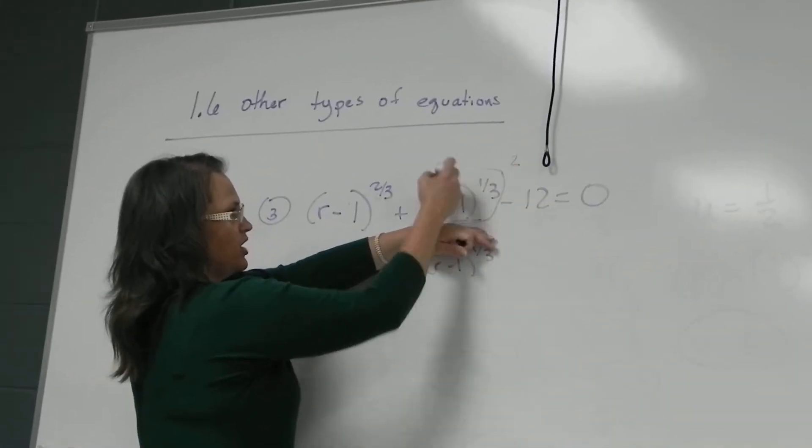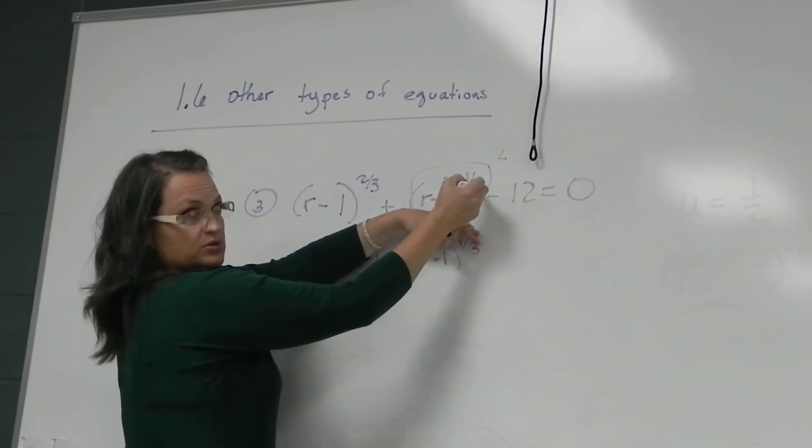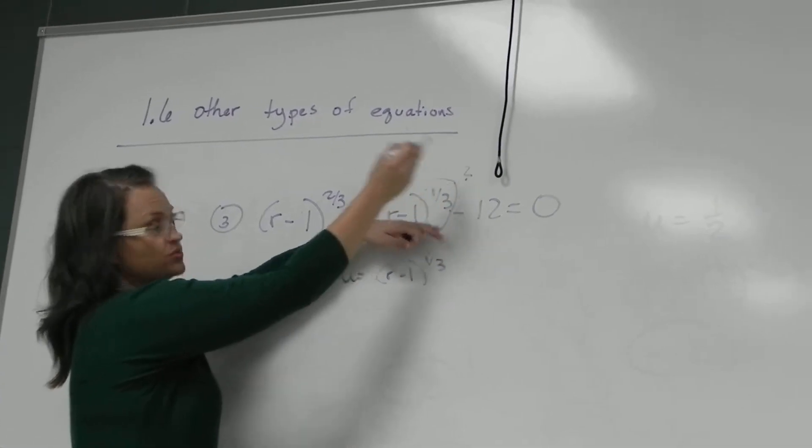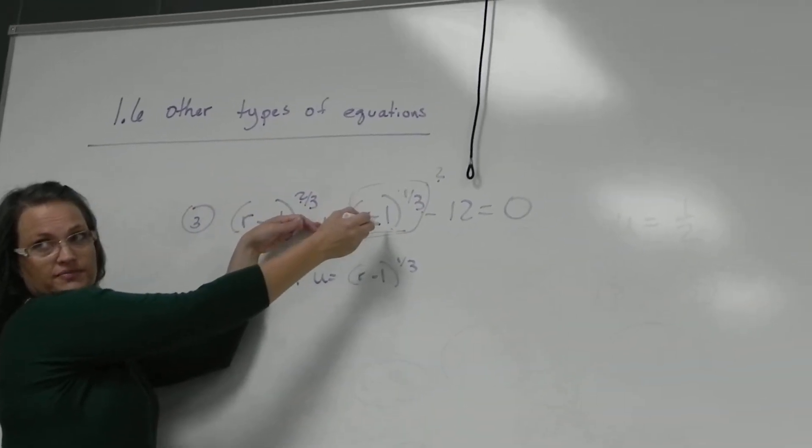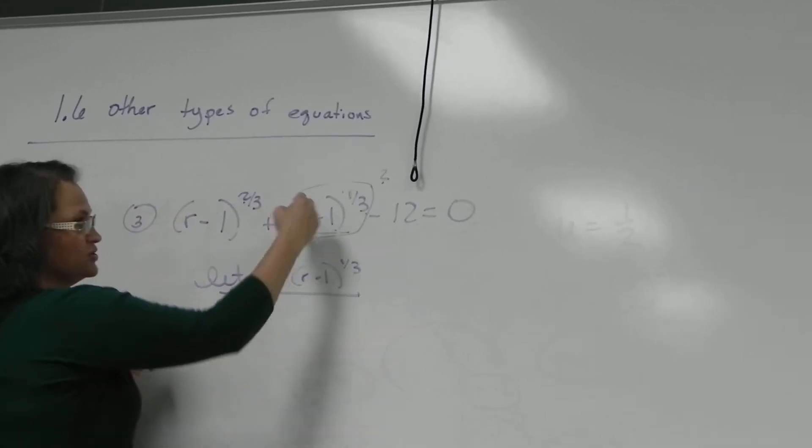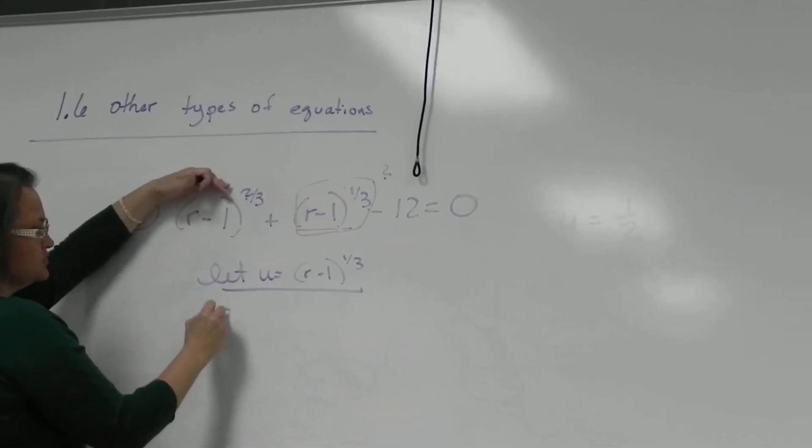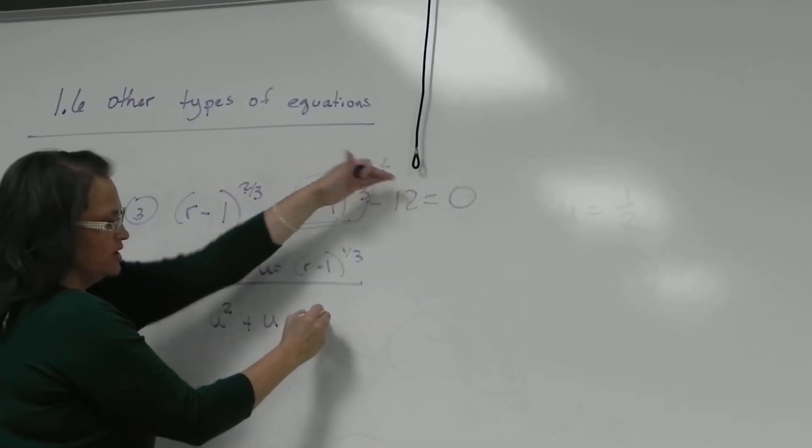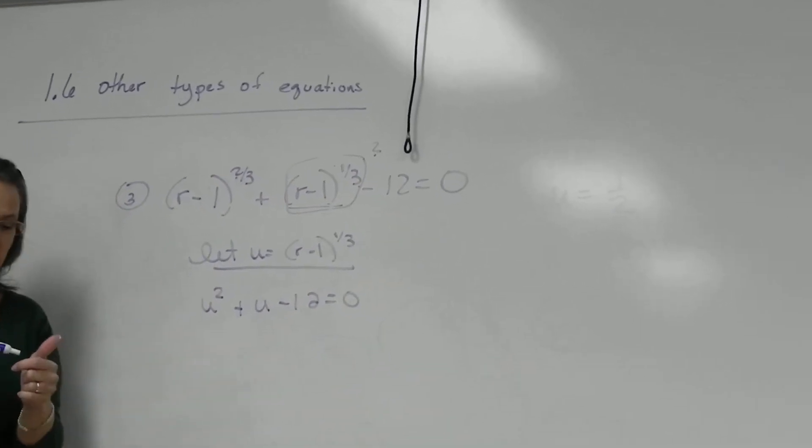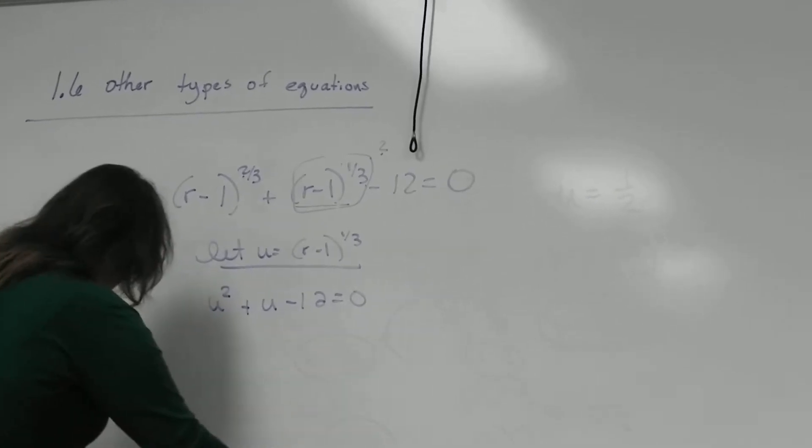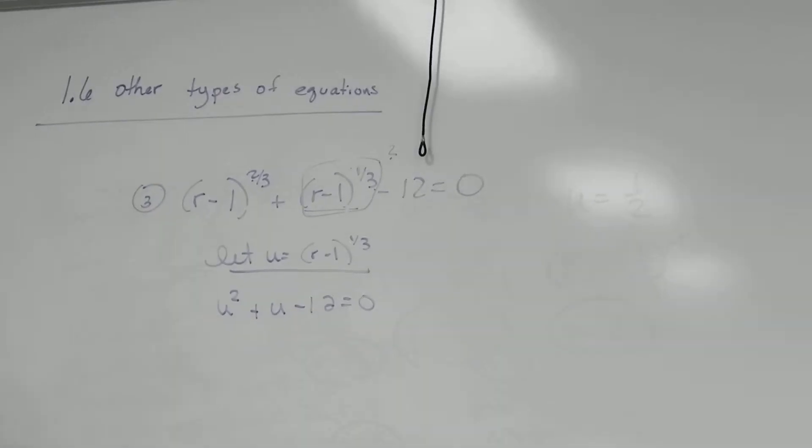So this is that square. So if I define u as that, that makes this u^2 + u - 12 = 0, a nice problem, right? So that's the whole idea of this. If there's some way to substitute out the ugly part, you want to do that.